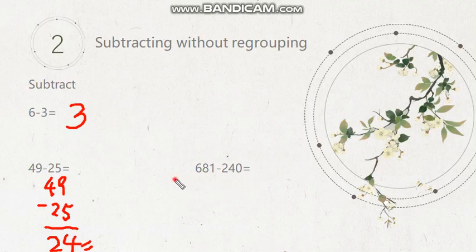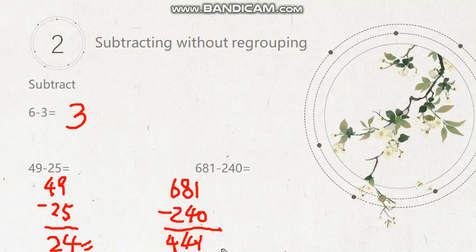How about this? 681 minus 240. 1 minus 0? 1. 8 minus 4? 4. 6 minus 2? Still 4. So your answer will be 441.